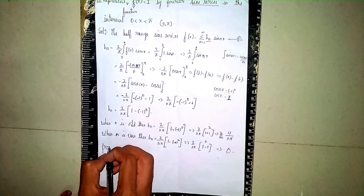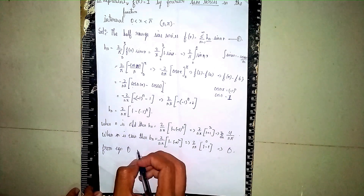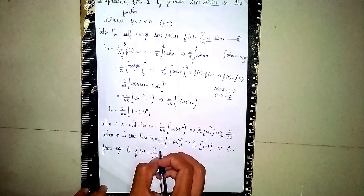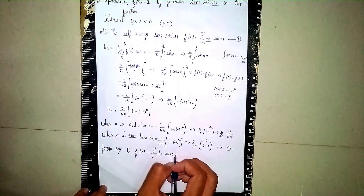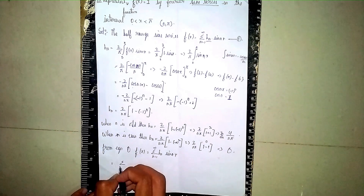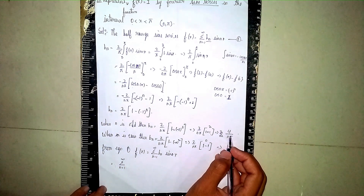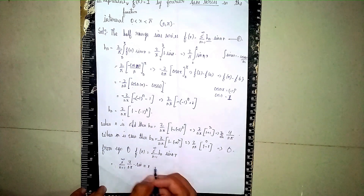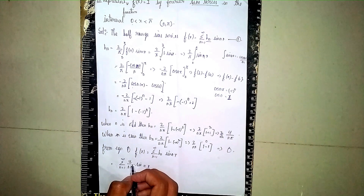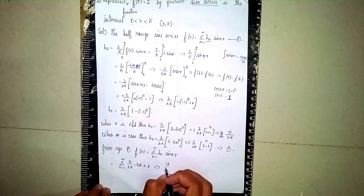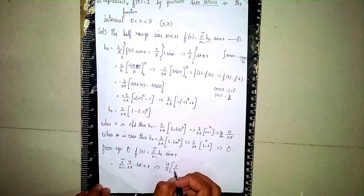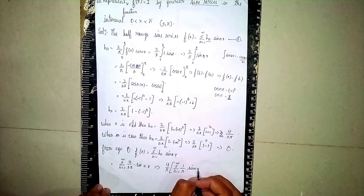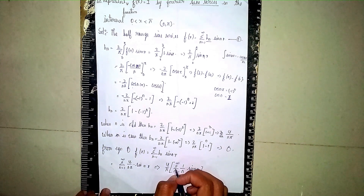Now from equation 1: f(x) = summation from n=1 to infinity of b_n sin(nx). Substituting the b_n value for odd n: it becomes summation of (4/nπ) sin(nx). Taking (4/π) outside the summation gives f(x) = (4/π) times summation from n=1 to infinity of (1/n) sin(nx), for odd n.